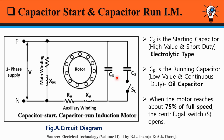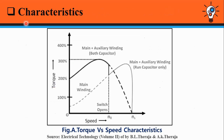The motor continues to run with both windings in the circuit — the auxiliary winding in series with the reduced capacitor CR. Due to the presence of both windings in the circuit, this motor is superior at all speeds compared to the capacitor start, induction run motor. The next topic of the session is the characteristics of Capacitor Start, Capacitor Run Induction Motor.